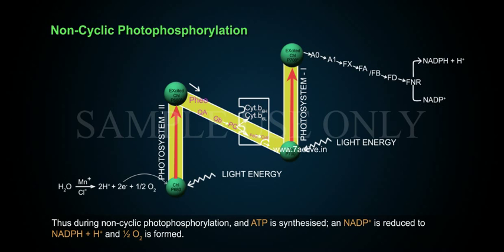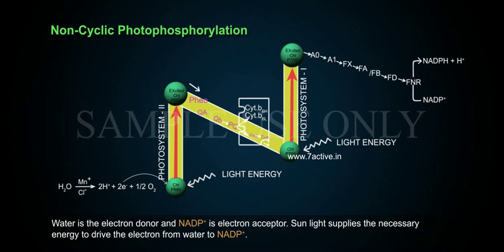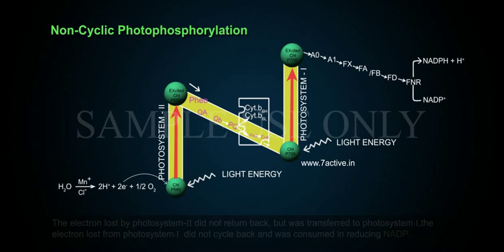Thus, during non-cyclic photophosphorylation, an ATP is synthesized, and NADP+ is reduced to NADPH + H+, and 1/2 O2 is formed. Water is the electron donor, and NADP+ is electron acceptor. Sunlight supplies the necessary energy to drive the electron from water to NADP+.